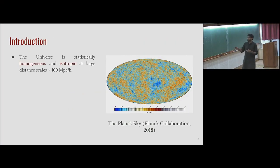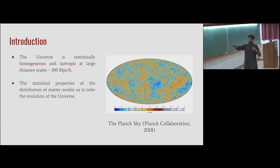Some of you might recognize this map. This is the map from the cosmic microwave background. From maps like these, we can show that the universe is actually statistically homogeneous and isotropic at large distance scales greater than 100 megaparsecs or so. The statistical properties of the matter distribution in the universe—and this is a proxy for the matter distribution—enables us to infer the evolution properties of the universe.